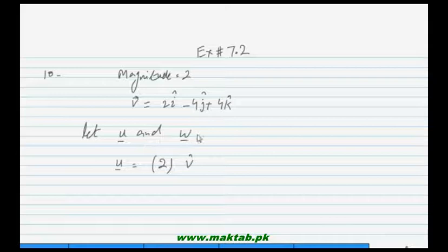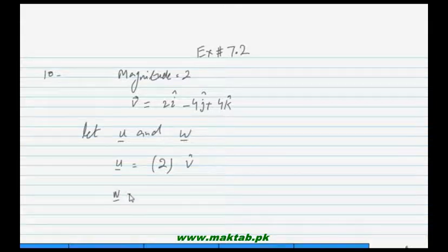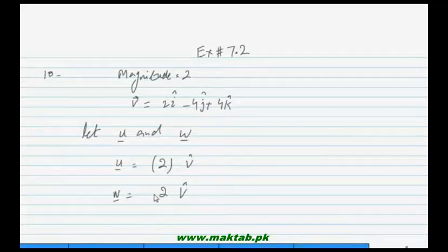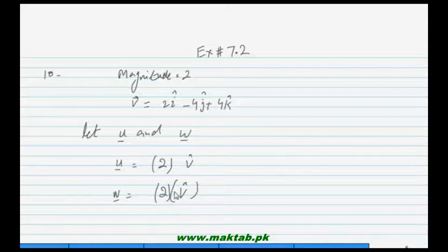The second vector w also has magnitude 2 and is parallel. The second vector uses the unit vector v-hat. If we multiply by minus, we get a vector that is still parallel to v but in the opposite direction.